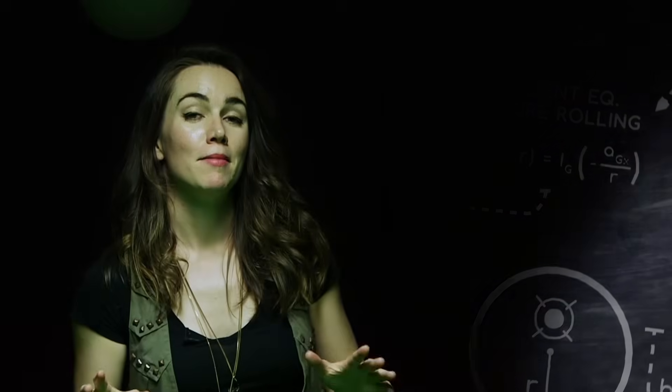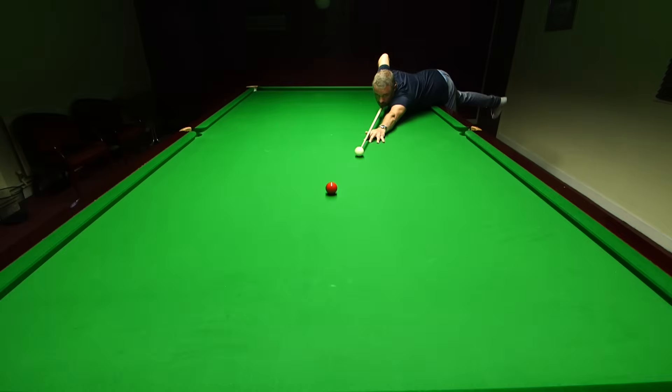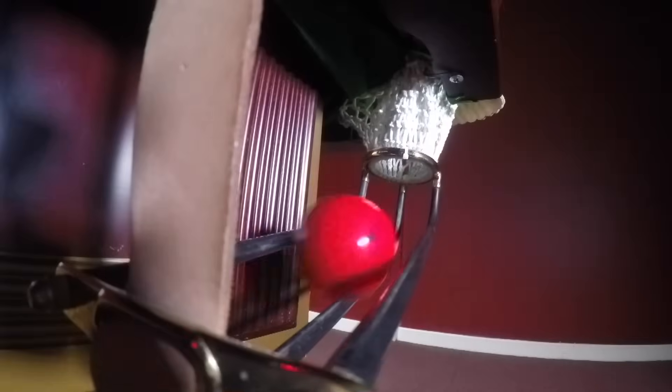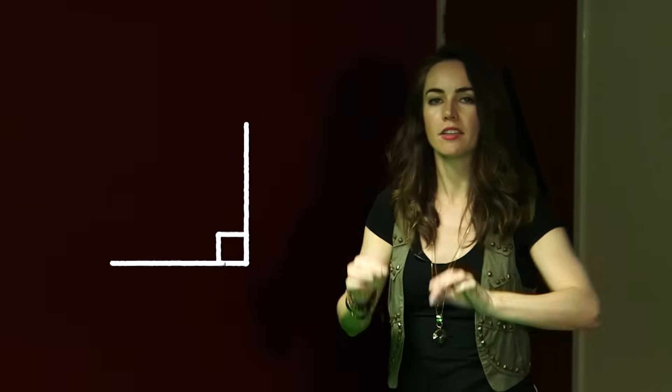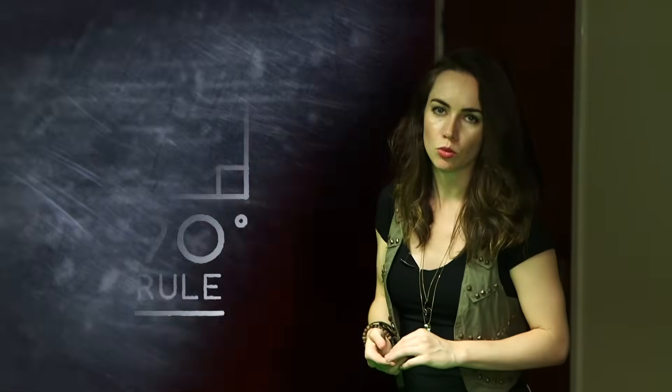The cool thing about momentum is that the velocity part of the equation doesn't just deal with speed, but also takes into account the direction of movement. This enables you to make really cool angled shots. If we take a closer look at how the balls behave, you can see that the angle between them after the collision is a perfect right angle — this is known as the 90 degree rule.